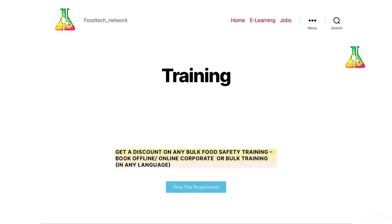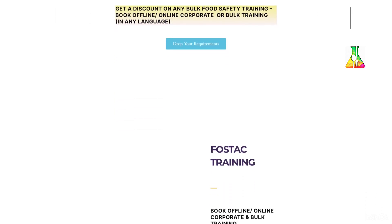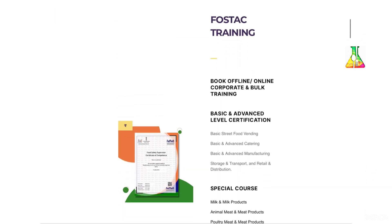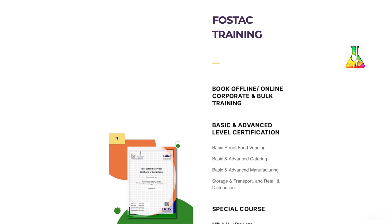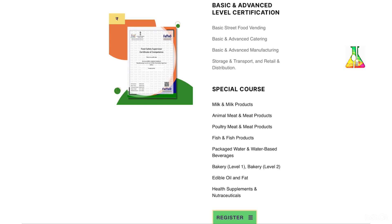After clicking on trainings and certification, you will be redirected to a new page. You can get a heavy discount on any bulk food safety training, like industry trainings or corporate trainings. You can book offline and online corporate or bulk trainings provided in any language, and drop your requirements by clicking on the blue box. FOSTECH offers three kinds of training: basic level, advanced level, and special courses.